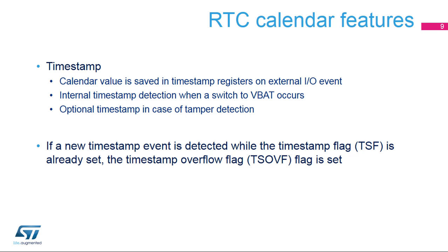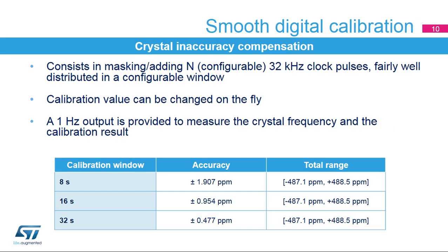If a timestamp event occurs while the timestamp flag is set, the timestamp overflow flag is set. In this case, the timestamp registers maintain the timestamp of the previous event. The digital calibration is used to compensate crystal accuracy and accuracy variations with temperature and aging. It consists in masking or adding a programmable number of RTC clock cycles fairly well distributed in a configurable window. The calibration value can be changed on the fly, depending on detected temperature changes. A 1 Hz calibration output signal is provided to measure the crystal frequency before and after applying the calibration value. The accuracy shown here is the resolution of the digital calibration. The calibration window size is configurable between 8, 16, and 32 seconds.